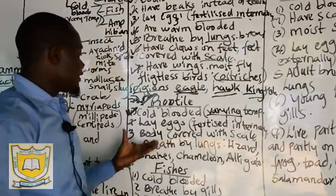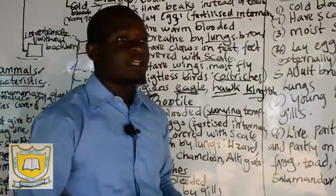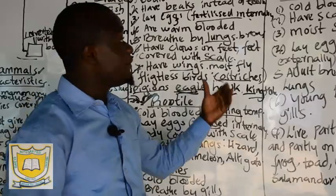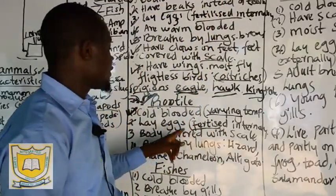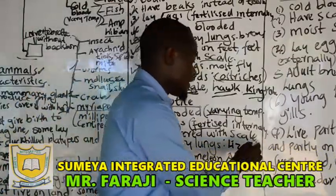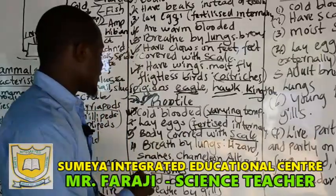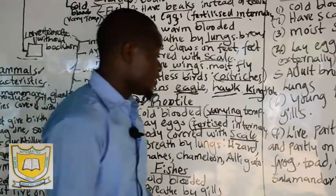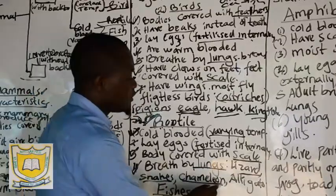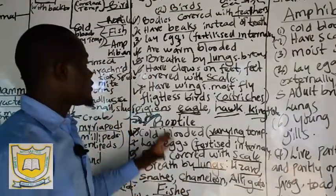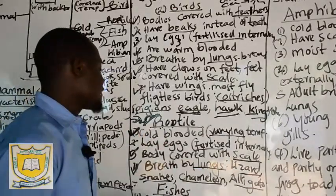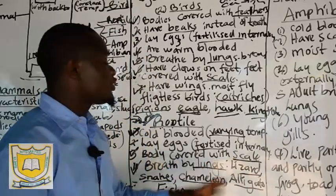Number three: the bodies of reptiles are covered with scales — the general body is covered with scales. Characteristic number four: they breathe through lungs. Examples of reptiles are lizards, snakes, chameleons, and alligators. So the four main characteristics of reptiles are: cold-blooded, lay eggs, body covered with scales, and breathe through lungs.